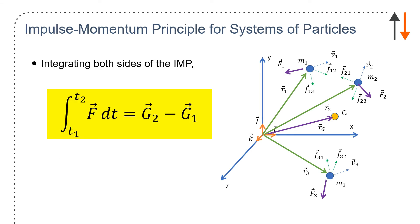Integrating both sides of the impulse momentum principle, you get T1 to T2, F dt, which is G2 minus G1. Again, this is the initial system momentum, and this is the final system momentum. This is the impulse of all external forces on the system.